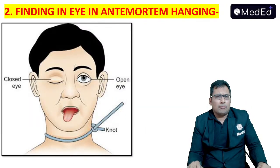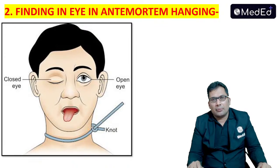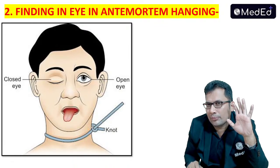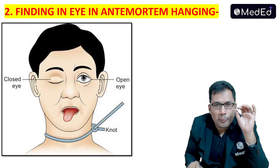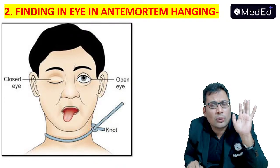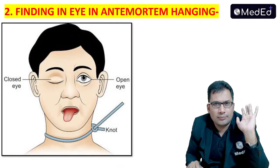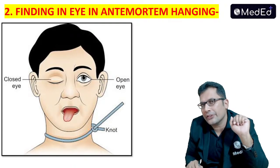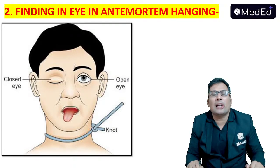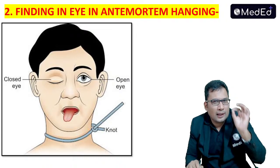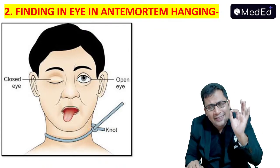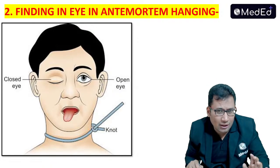Second important finding in case of hanging: if the exam asks for the most important finding in antemortem hanging, your answer should be dribbling of saliva. Dribbling of saliva is one of the surest signs of antemortem hanging.